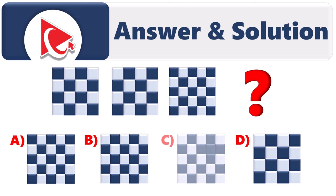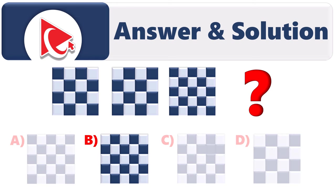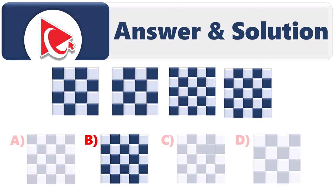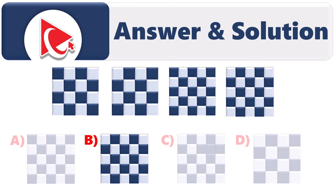Once we've determined what we believe is the final shape, let's double-check it by comparing to the provided choices and ensuring it matches the pattern and colors. The correct answer is choice B, because it matches all the criteria and continues the sequence.